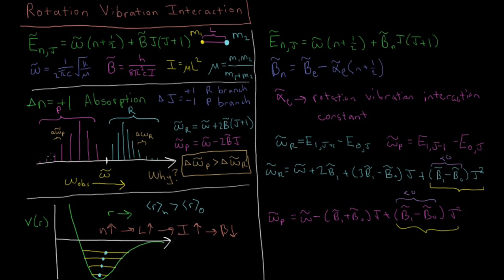Whereas the P branch, they're decreasing in frequency as you go up in j. So this quadratic negative term here is going to actually push them further apart. So that's one term that's contributing to this effect of the P branch being more spread out than the R branch.